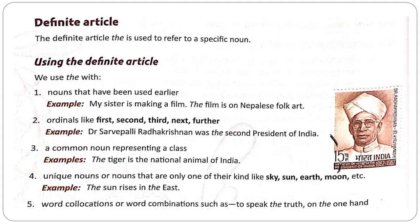The definite article THE is used to refer to a specific noun. We use THE with nouns that have been used earlier. For example: 'My sister is making a film. The film is only on Nepal's folk art.' In the first sentence, the word film is used for the first time, so indefinite article A is used. The second time this noun is used, we use definite article THE.